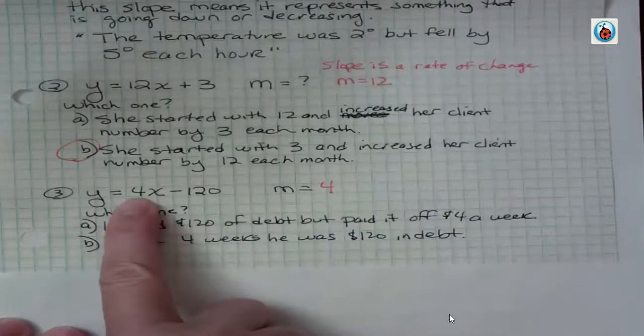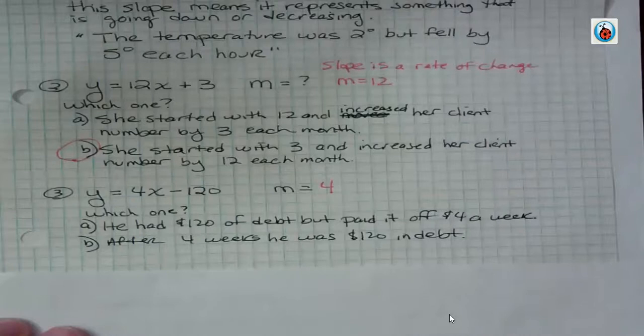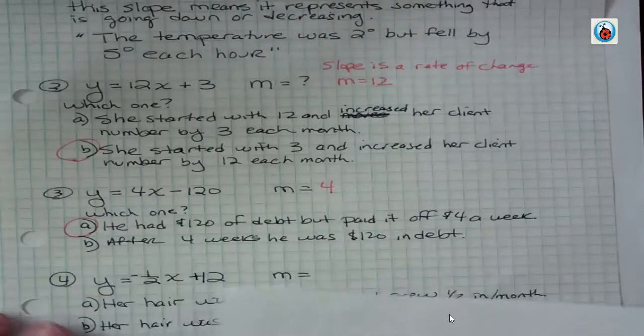Eventually he will come out of debt, right? Like in 28 weeks or whatever it is. 25 plus 5 more, 30 weeks. 30 weeks, he's out of debt, right? So it's A, he had $120 of debt but paid it off $4 a week.